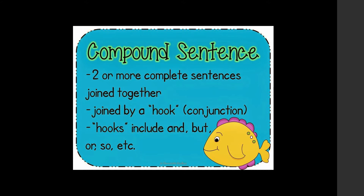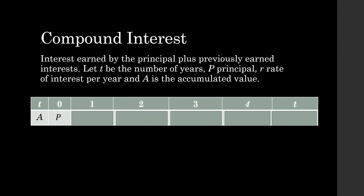So what is compound interest? It is interest earned by the principal plus previously earned interests. The idea behind compound is being more than one — two or more than two. We call it compound interest because interest comes from two sources: it comes from the principal and it also comes from the previously earned interests.